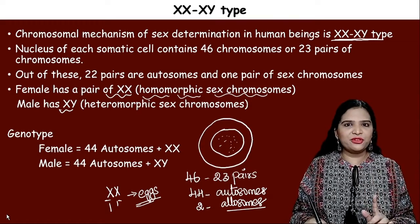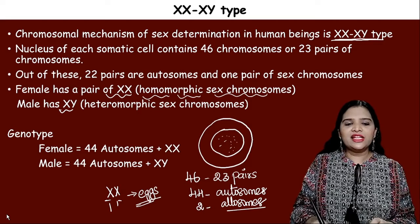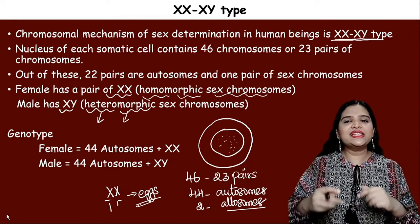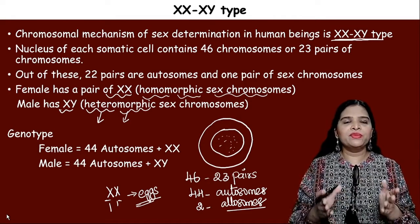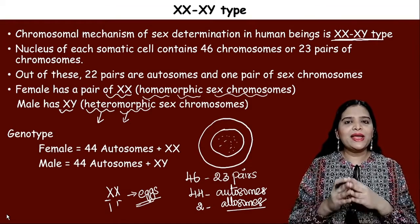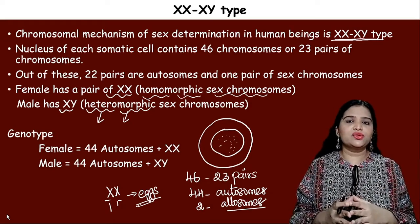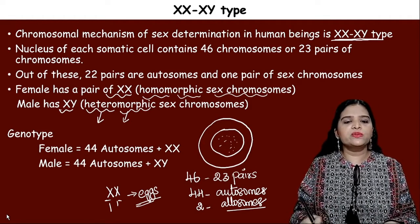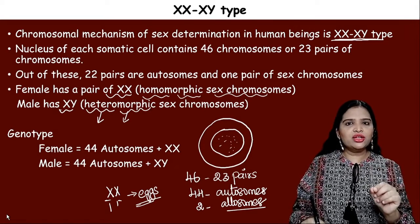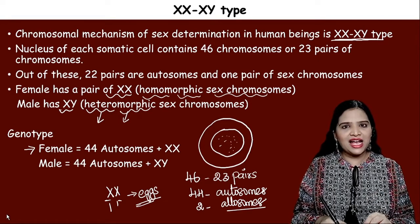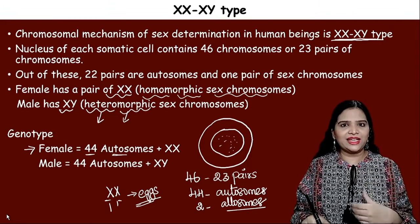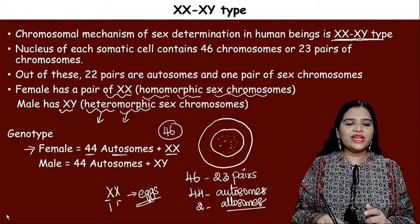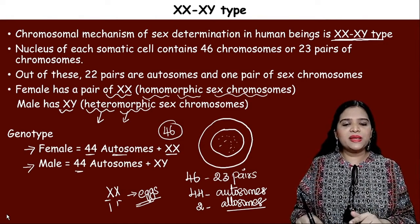Males produce gametes with two different types of chromosomes, so male sex chromosomes are heteromorphic. In terms of genotype, a female has 44 autosomes plus two sex chromosomes (XX), totaling 46 chromosomes. A male similarly has 44 autosomes plus two sex chromosomes (XY), totaling 46 chromosomes.